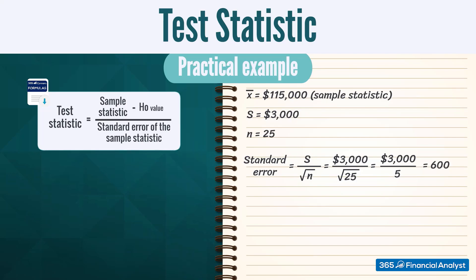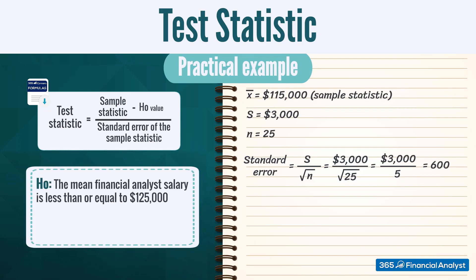Here's the null hypothesis we would like to test. The mean financial analyst salary in the USA is less than or equal to $125,000. So, the value of the population parameter under the null hypothesis is $125,000.